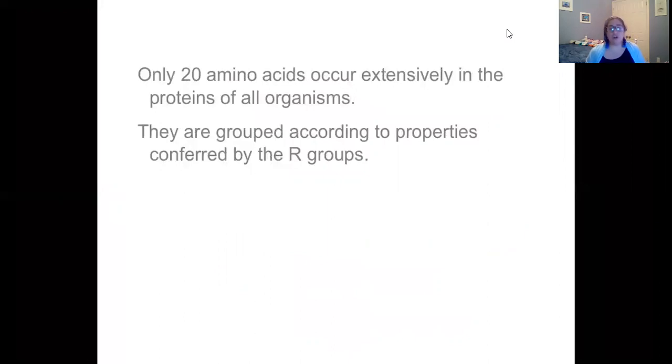Only 20 amino acids occur extensively in the proteins of all organisms. There are other ones, but they're just not as common, and they're grouped together according to the R group properties. So as I mentioned, you can have some that are hydrophobic, some that are hydrophilic.